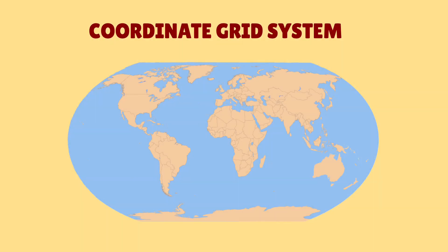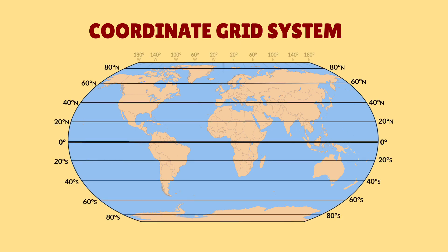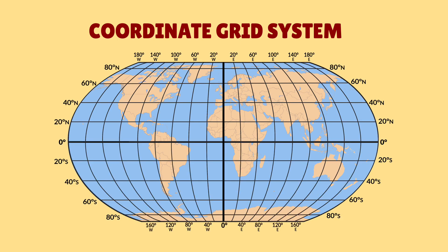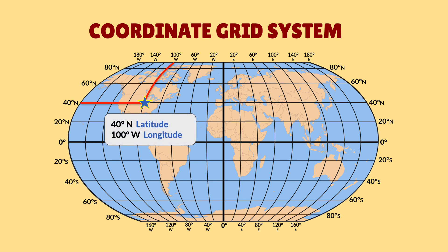To identify locations on Earth, we use a coordinate grid system, represented by all of these lines. Every location on Earth has an exact global address that uses two coordinates on the grid. For example, this location with the blue star is at 40 degrees north and 100 degrees west. Those two coordinates are called the latitude and the longitude, and that's the global address of that location.